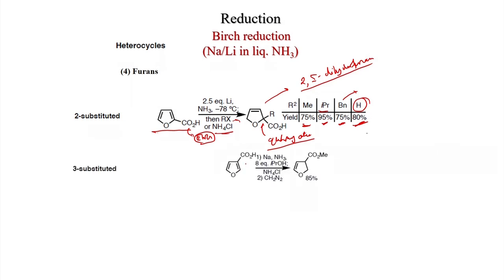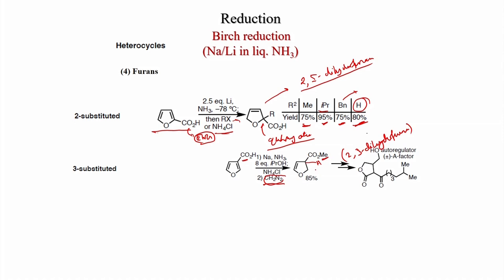For 3-substituted furan (carboxylic acid at position 3), the reduction gives 2,3-dihydrofuran. Using sodium in liquid ammonia and 8 equivalents of isopropanol/ammonium chloride as proton source, the carboxylic acid can be converted to the methyl ester with diazomethane, and this compound can be further elaborated to a biologically active compound — an autoregulator of the a-factor.